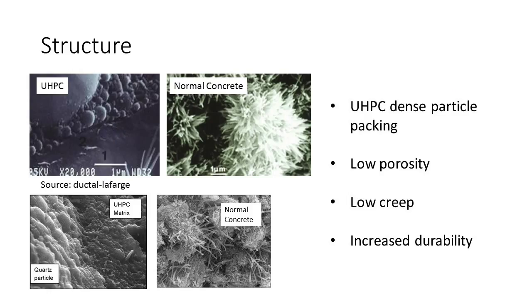With the structure, you can see in the images here that particle packing is one of the key structural components of ultra high performance concrete. The largest aggregate size in UHPC is about the size of the fine grain aggregates in normal concrete. By controlling the type of cement that goes into it, you're able to reduce or eliminate the ettringite formations that typically happen in Portland cement. By reducing those formations and having this very dense particle packing, you're able to produce a mix that also has very low porosity.